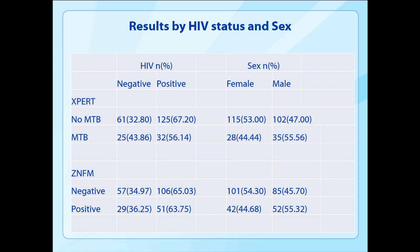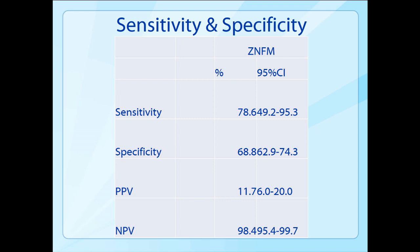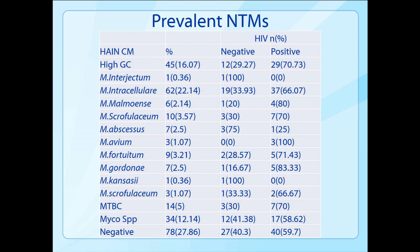Looking at the sensitivity of smear versus Xpert and LPA, sensitivity for smear was about 78.6%, with a positive predictive value of about 11.7% and an NPV of about 98.4%. These are the common NTM species found prevalent in our region — we are yet to find another study in our country that has done this. We hope to do more to really know the actual prevalence of all NTMs.